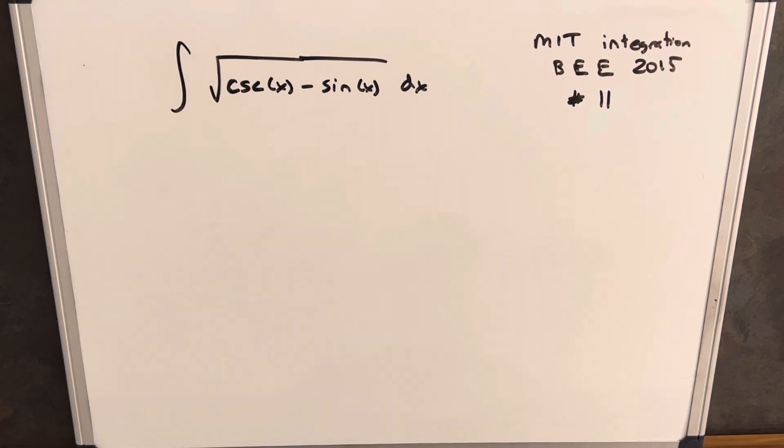Hey, we have an integral on the board from the MIT Integration B 2015, problem 11. We have the integral of cosecant x minus sine of x dx.